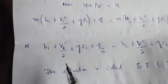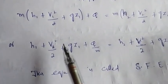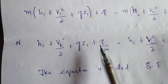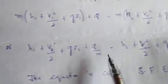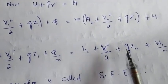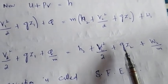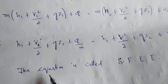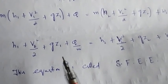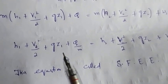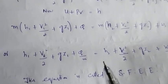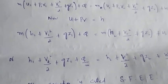Writing this equation per unit mass, we have: H1 + V1²/2 + g·Z1 + Q/M = H2 + V2²/2 + g·Z2 + WS/M. This equation is called the steady flow energy equation and will be used for the calculation of various numericals, which we will be dealing with in the next session.